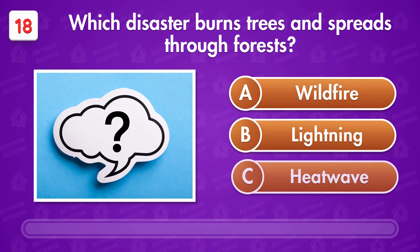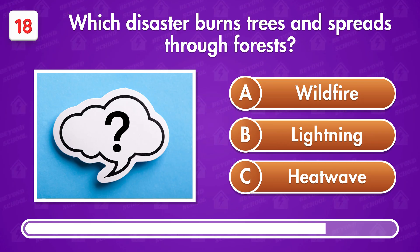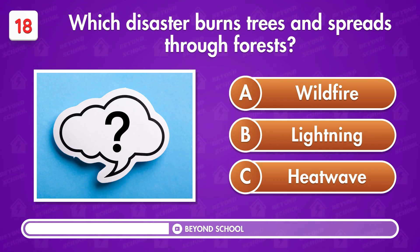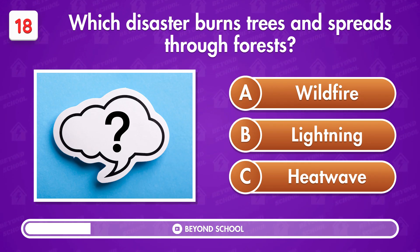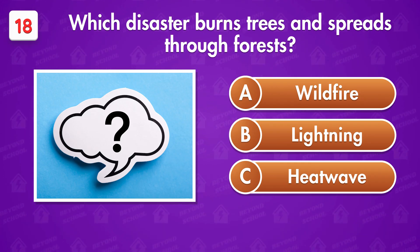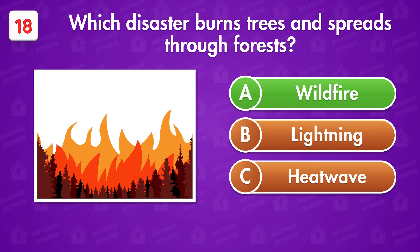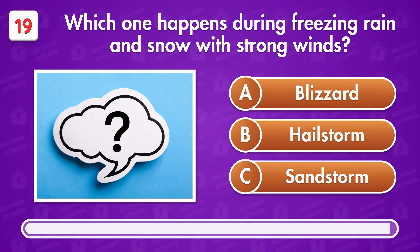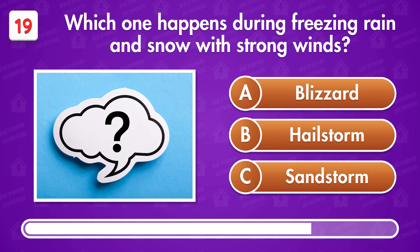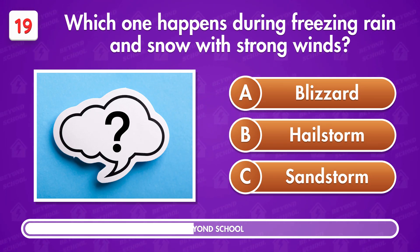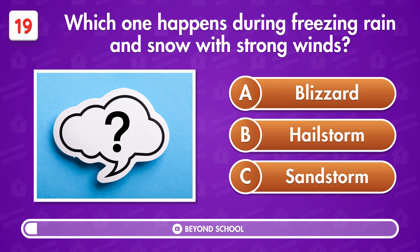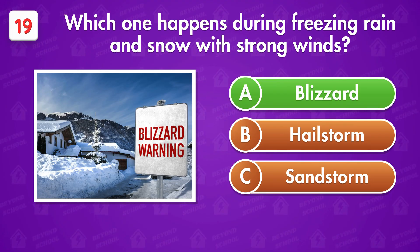Which disaster burns trees and spreads through forests? This is a wildfire. Which one happens during freezing rain and snow with strong winds? Blizzard is the answer.